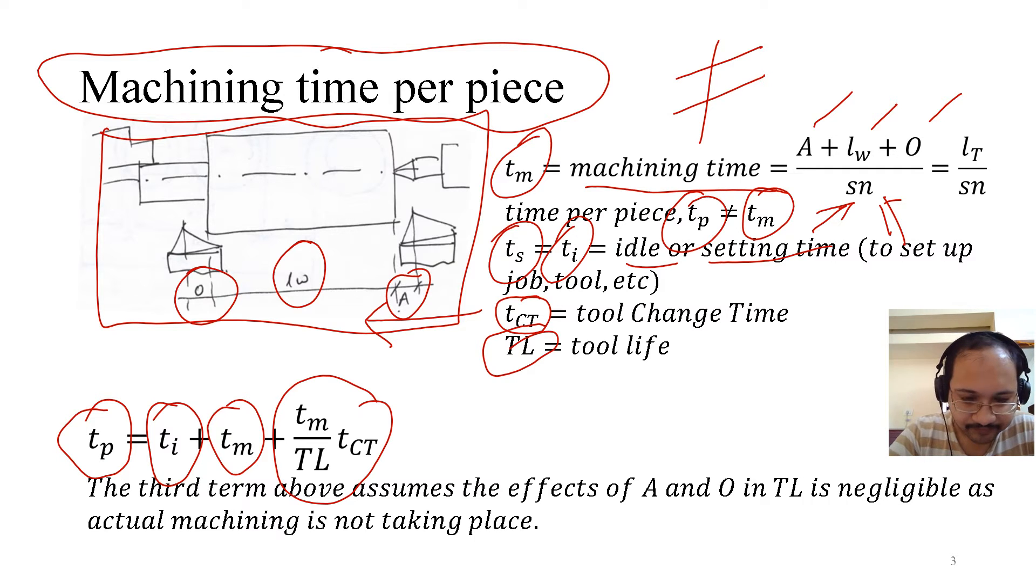Now there is a catch. In this expression, obviously there is no physical machining taking place at the approach and at the overtravel. So their effects can be assumed to be neglected, which we have considered here. So even if we use the similar expression of TM, because the effects are negligible, it is fine to use this expression of time per piece.